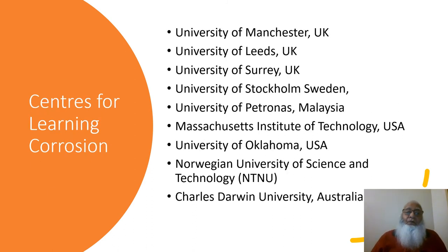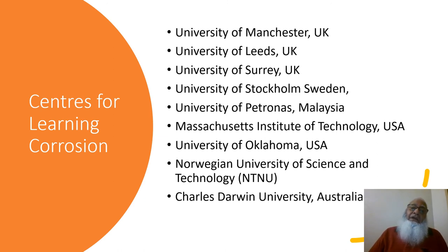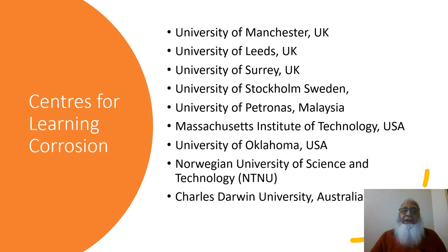This slide shows centers for learning corrosion, for the graduate or undergraduate engineer of a different discipline or a beginner who wishes to learn corrosion. The University of Manchester is listed first as it offers a master's degree in corrosion. The University of Leeds and the University of Surrey offer specialized corrosion courses. The University of Stockholm, University of Petronas, MIT, University of Oklahoma, Norwegian University of Science and Technology, and Charles Darwin University Australia also offer corrosion courses or degrees.